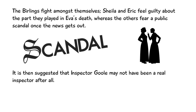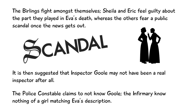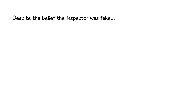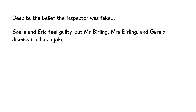Gerald then offers the idea that Eva Smith may not have been just one girl, and that the Inspector was actually talking about a few different girls that the different members of the family had come across. He points to the fact that the Inspector showed a photograph to each character, but only let that character see it in that moment — so he argues that maybe it was a different photograph every time. Gerald calls the infirmary and gives a description of Eva and the way she died, and the infirmary claim that nobody matching that description had been brought in that night. Despite this, Sheila and Eric still feel guilty for what they did, even if it wasn't to the same girl — to which Mr Birling, Mrs Birling and Gerald dismiss and laugh off, with Mr Birling proclaiming the famous line: 'The younger generation — they can't even take a joke.'